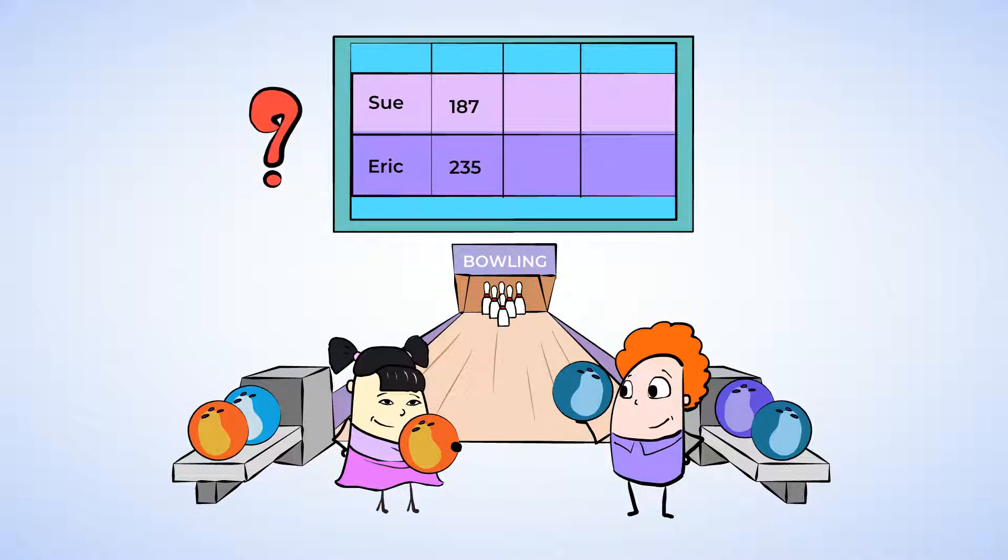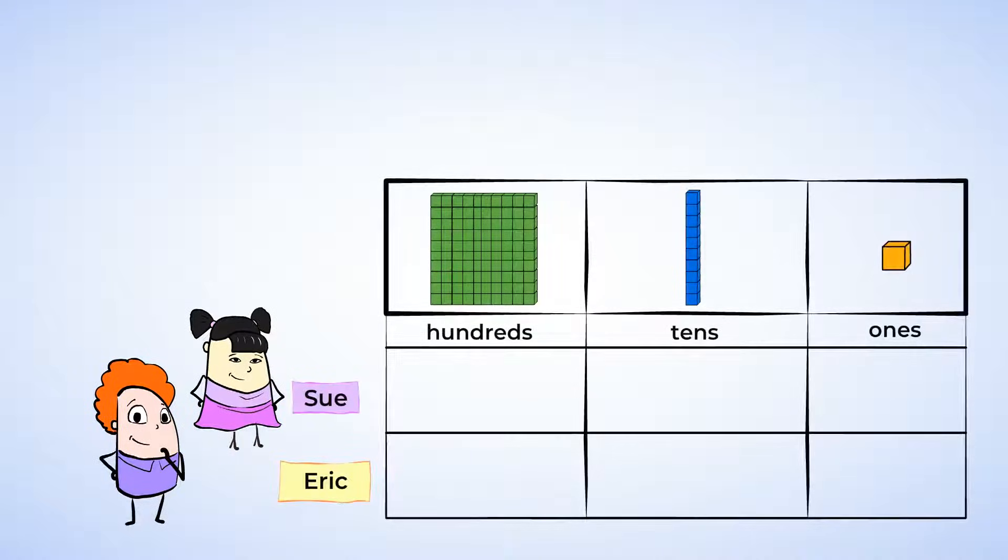Is Sue's score greater than or less than Eric's score? Let's use our place value charts again to find out. Sue scored 187, and this means that there is a 1 in the hundreds place, an 8 in the tens place, and a 7 in the ones place.